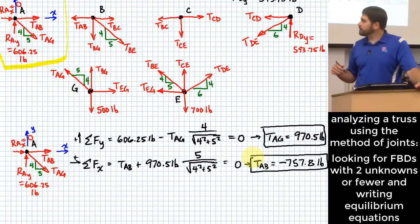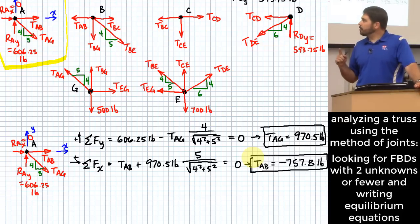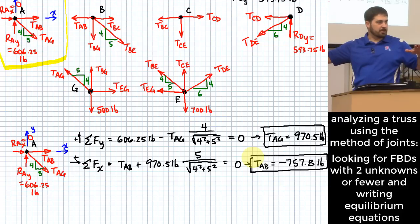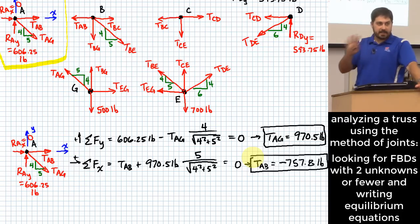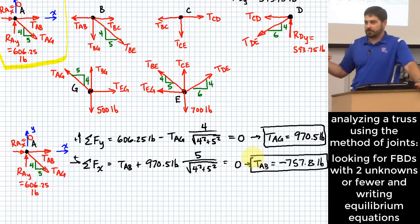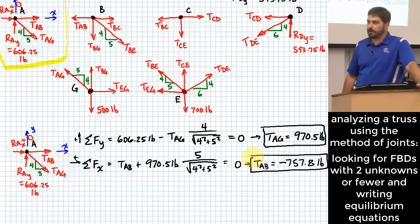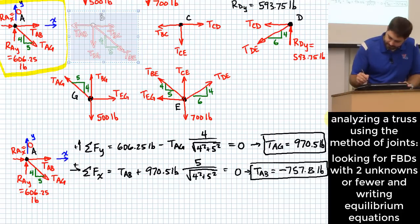Some people at this point like to flip the arrows of members found to be incorrect. I think it's better in most cases to leave them the direction they're shown and let the signs speak for themselves — you have a negative tension of 757.8 acting on joint A instead of a positive tension, and you can interpret that as compression. We did the first joint. What do you want to go to now? B.